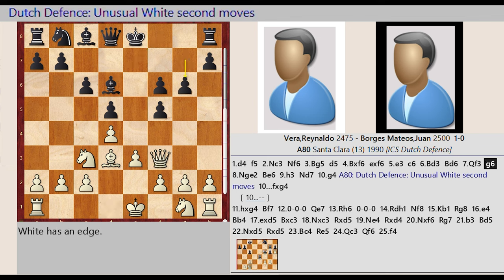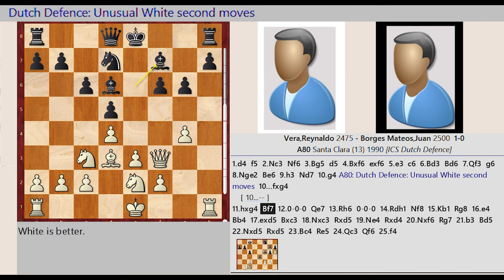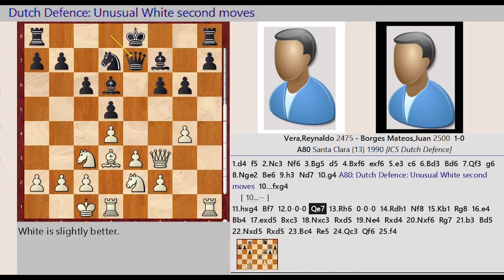G7 G6, Knight G1 E2, Bishop C8 E6, H2 H3, Knight B8 D7, G2 G4. This is the A80 Dutch Defense with unusual white second moves. F5 captures G4, H3 captures G4, Bishop E6 F7, Castling Queen side, Queen D8 E7, Rook H1 H6.